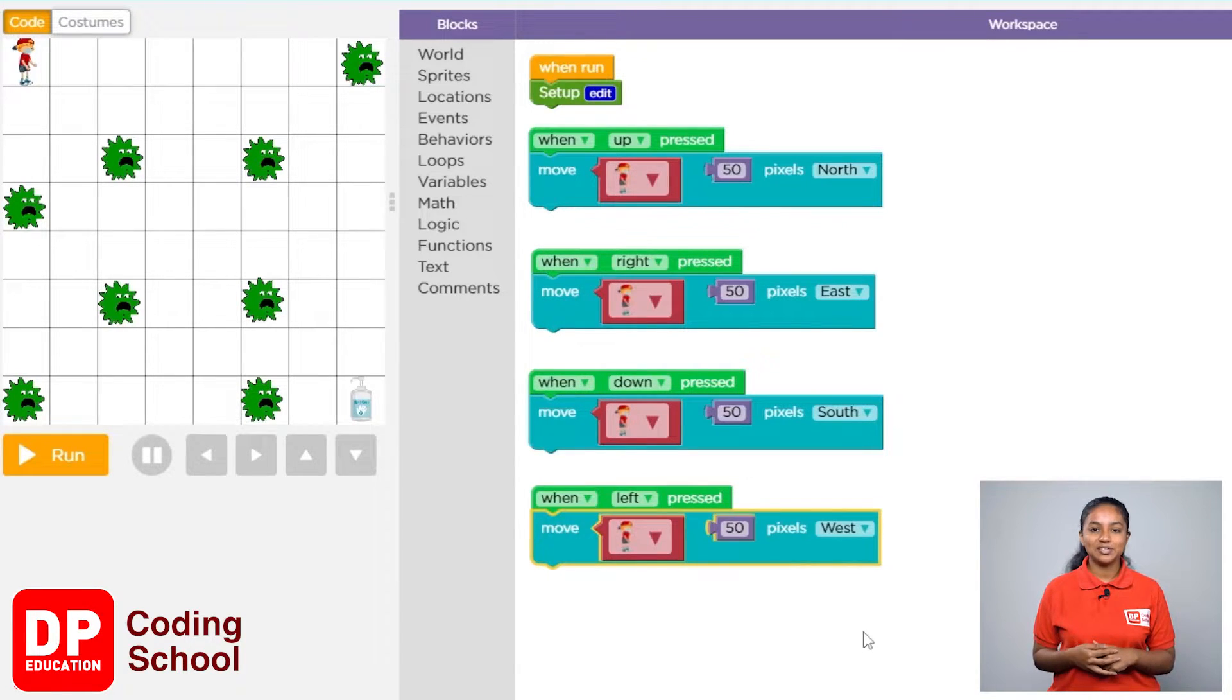As soon as this child comes into contact with coronavirus, the child needs to become small and invisible. That means the child should shrink. Let's create that command.